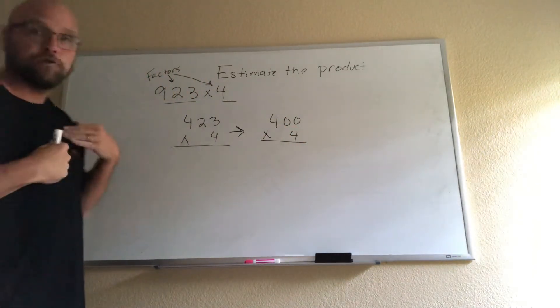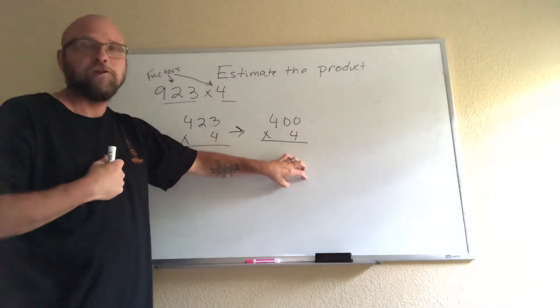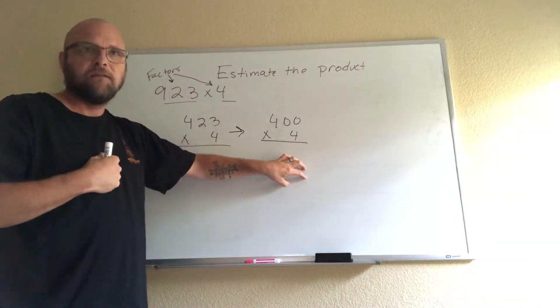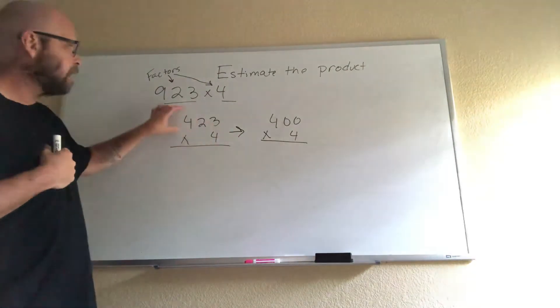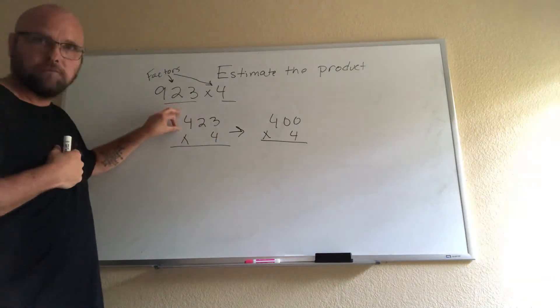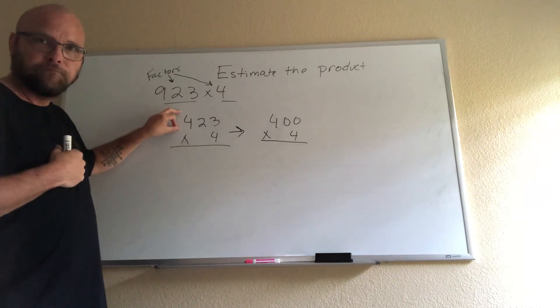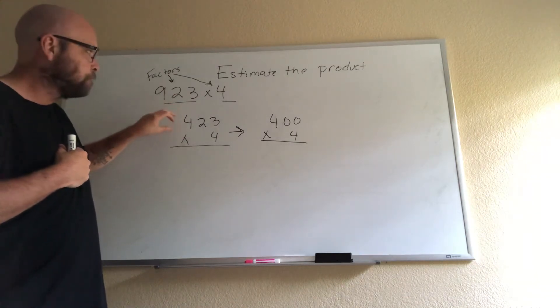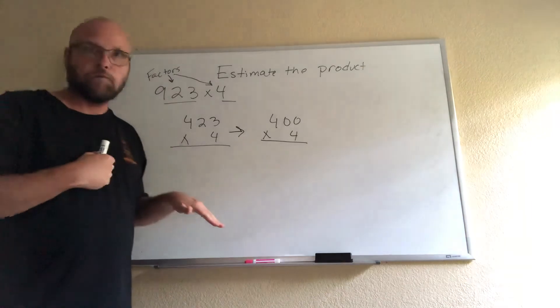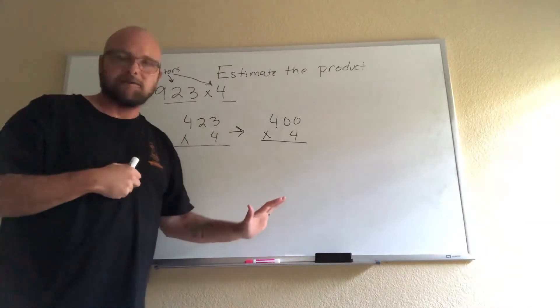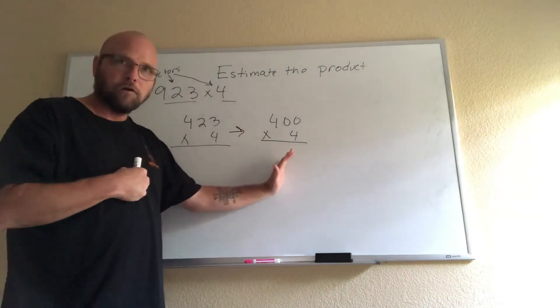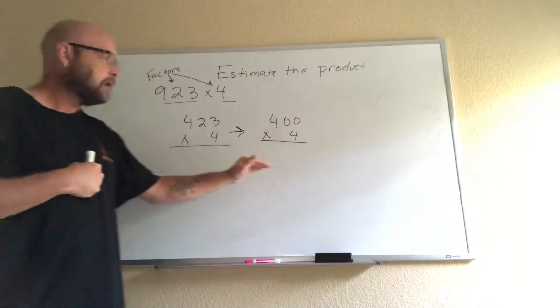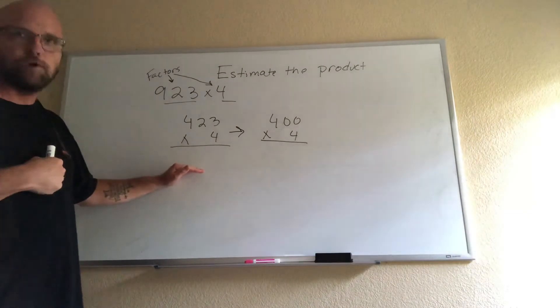Now my estimate is going to be less than the actual product. It's going to be less because I moved this down. I changed this to 900 from 923. So whatever I get in my estimate is going to be smaller than the actual product.